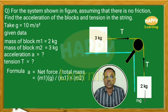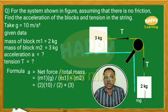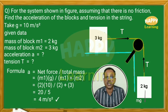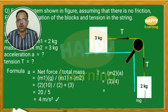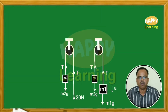Formula: acceleration equals net force by total mass. Net force is M1 times g, since the weight of block M1 pulls the system. Substituting: a equals 2 into 10 divided by 2 plus 3, that equals 20 by 5, equals 4 meters per second square. Tension T equals M2 into A equals 3 into 4 equals 12 newton.